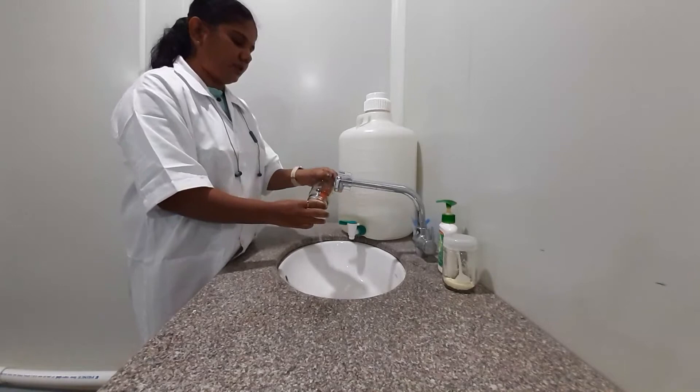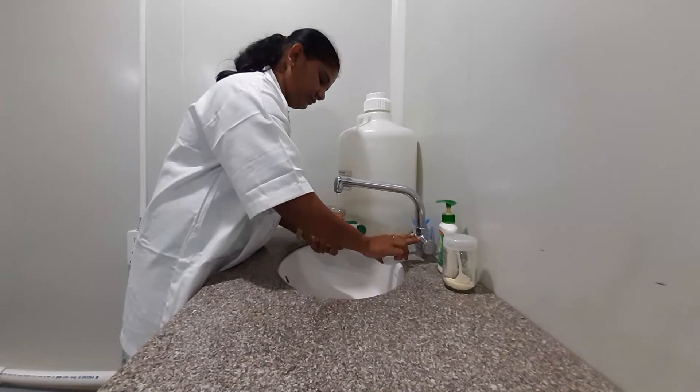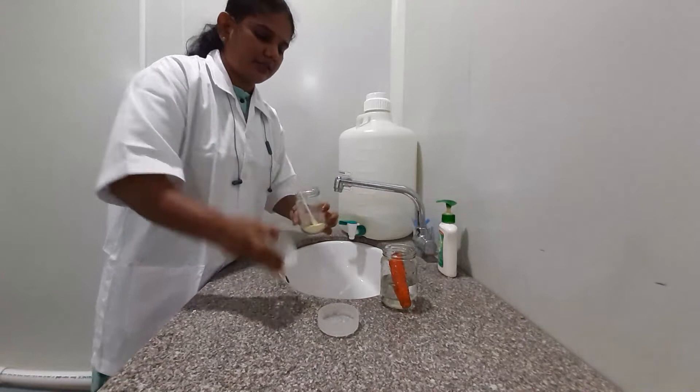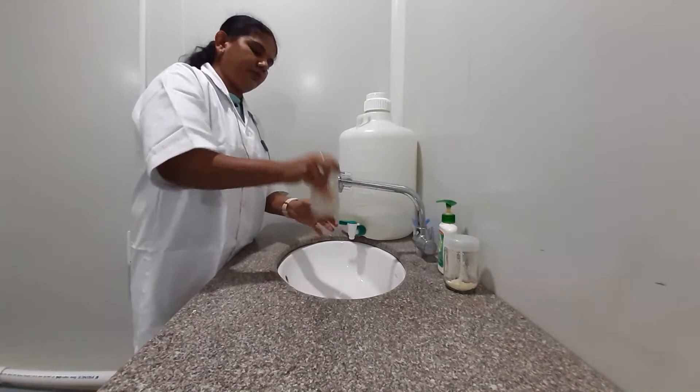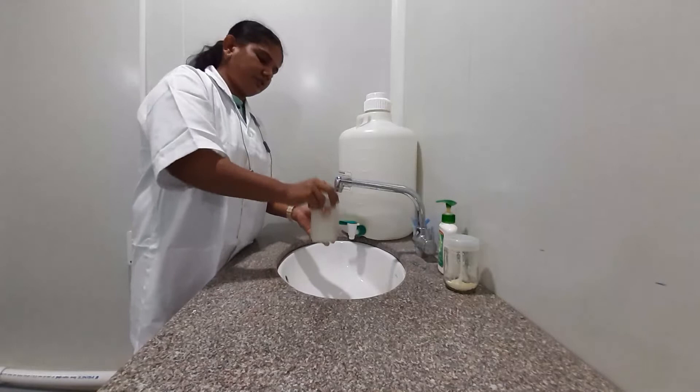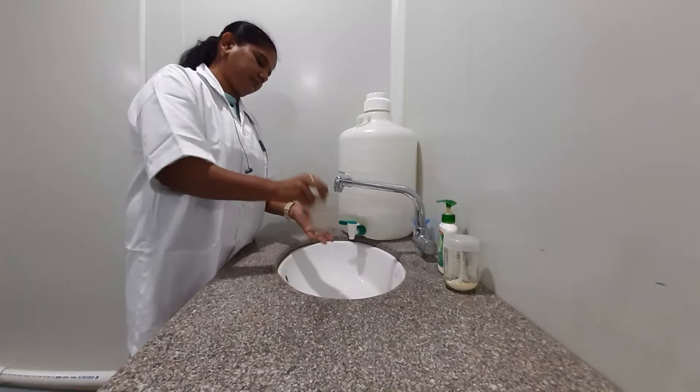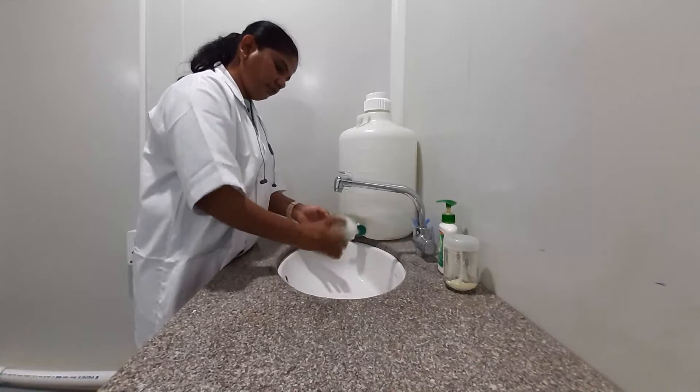Thorough rinsing will be done. Next, as the carrot is grown underground, its surface has more microorganisms. For that, we have to rinse it using detergent. We will wash the carrot with detergent solution for about 10 minutes.